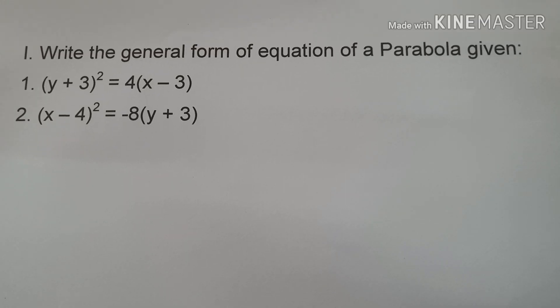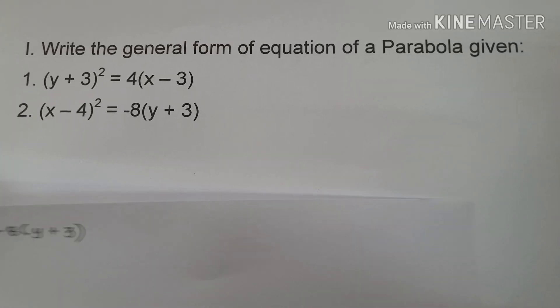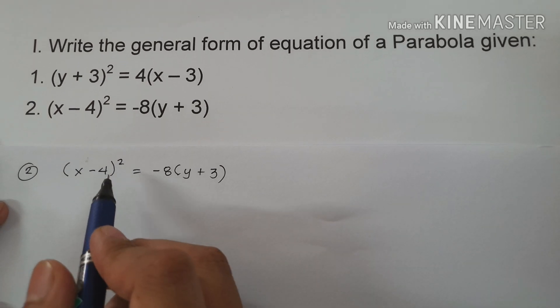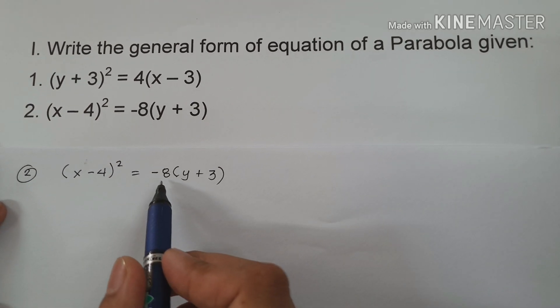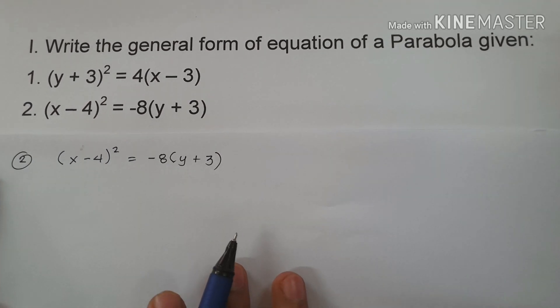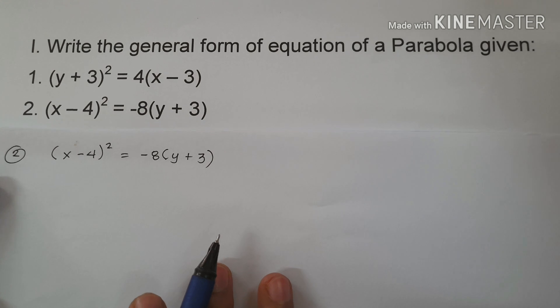For our next example, we have (x - 4)² = -8(y + 3).